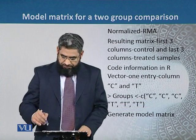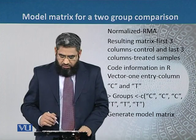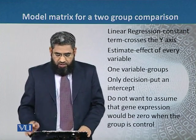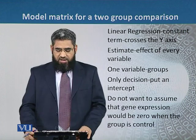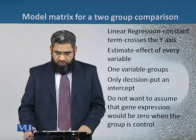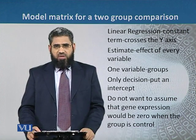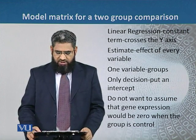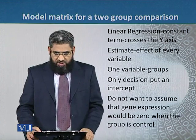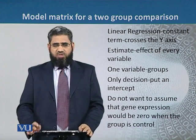After coding, we have to generate the model matrix so that we can process it further. For this purpose, we use linear regression because we want to know where the linear regression crosses the X axis. Linear regression only estimates the effect of every variable. In our case, we have one variable — the groups — and we have already indicated that we have two groups: control and treated.